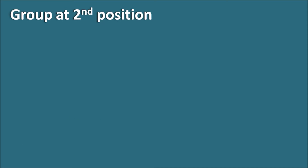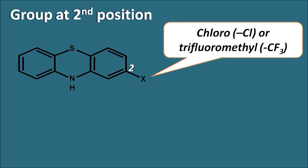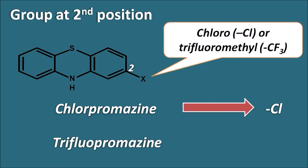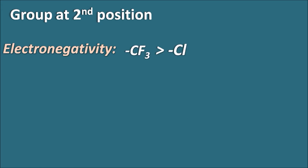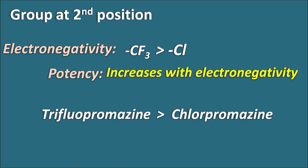Phenothiazines have a group at the second position, which is an electron-withdrawing group — either chloro or trifluoromethyl. For example, chlorpromazine has the chlorine group at the second position, and trifluopromazine has the trifluoromethyl group. Trifluoromethyl has greater electronegativity than chlorine due to the three fluorine groups. As electronegativity increases, potency also increases; therefore trifluopromazine is more potent than chlorpromazine.